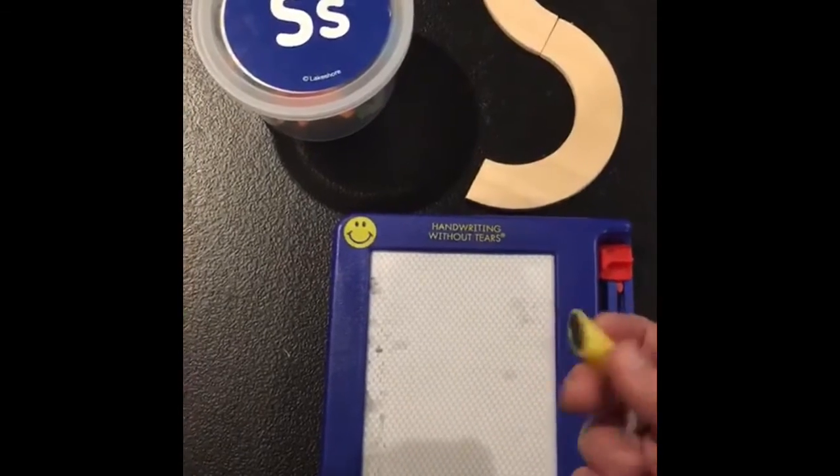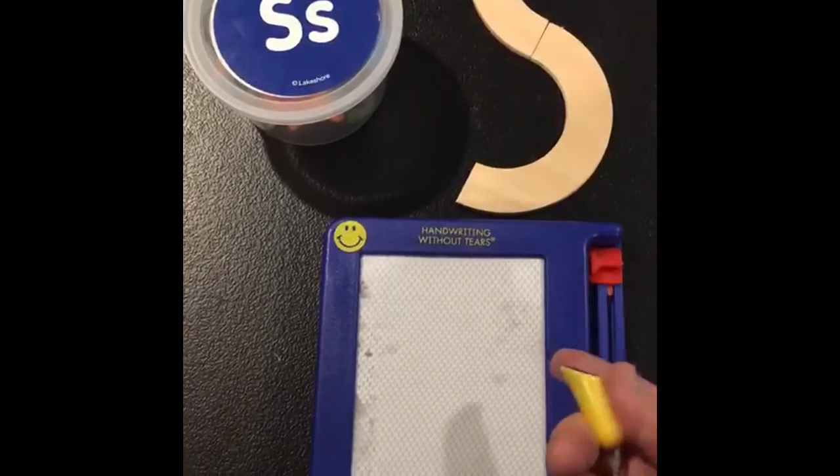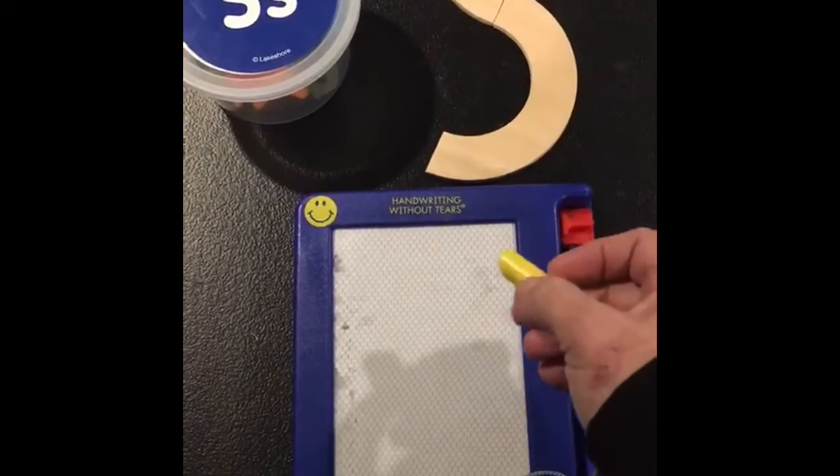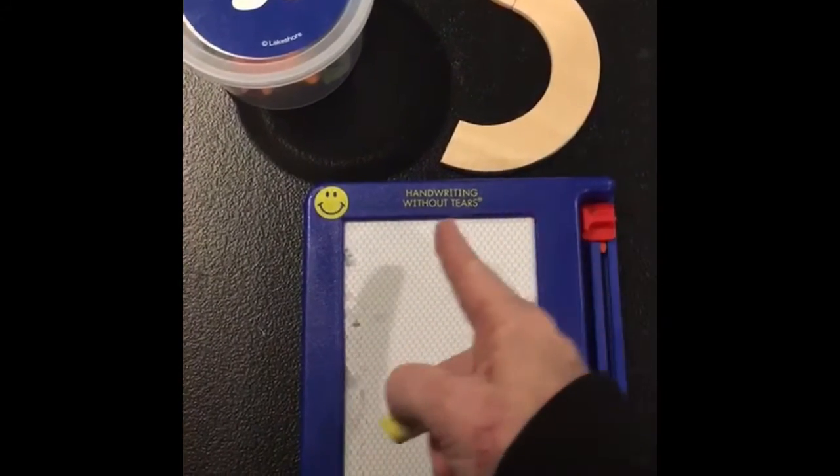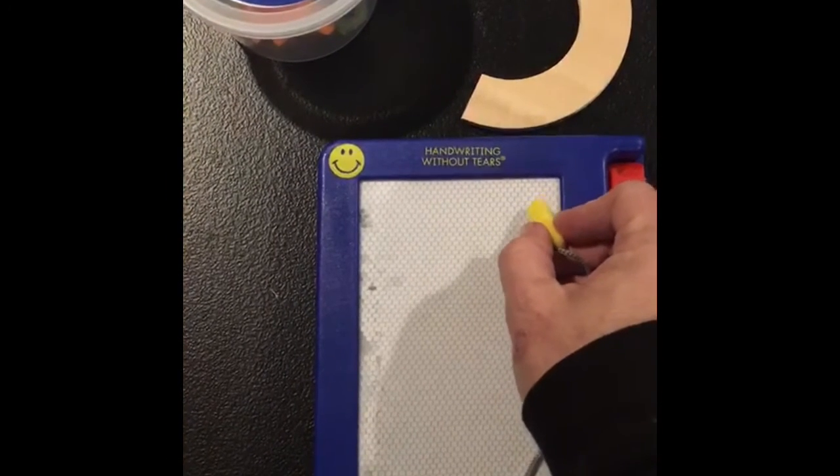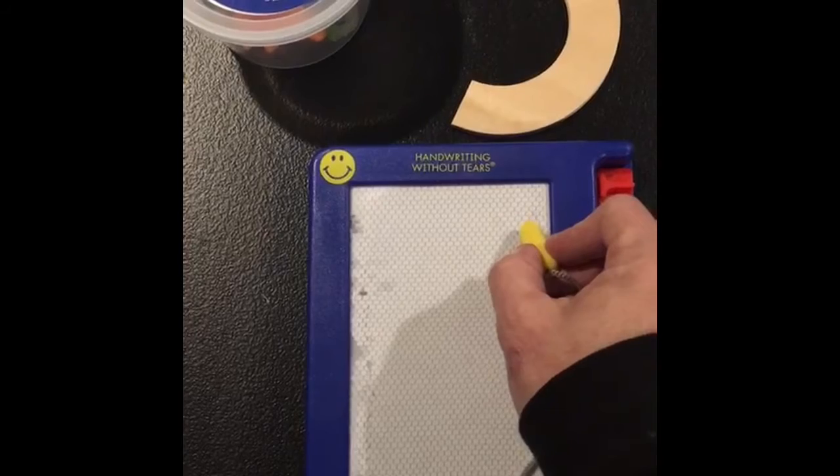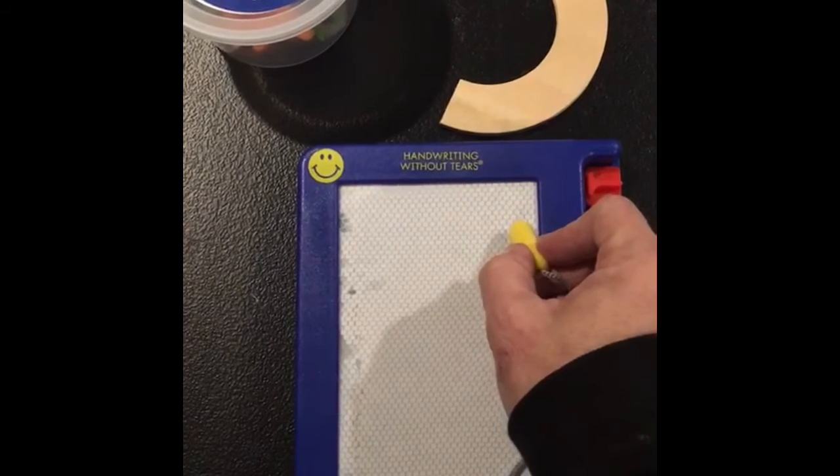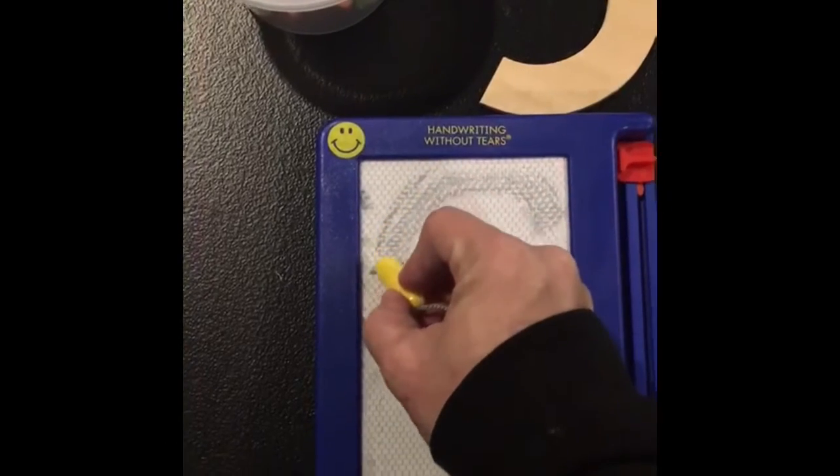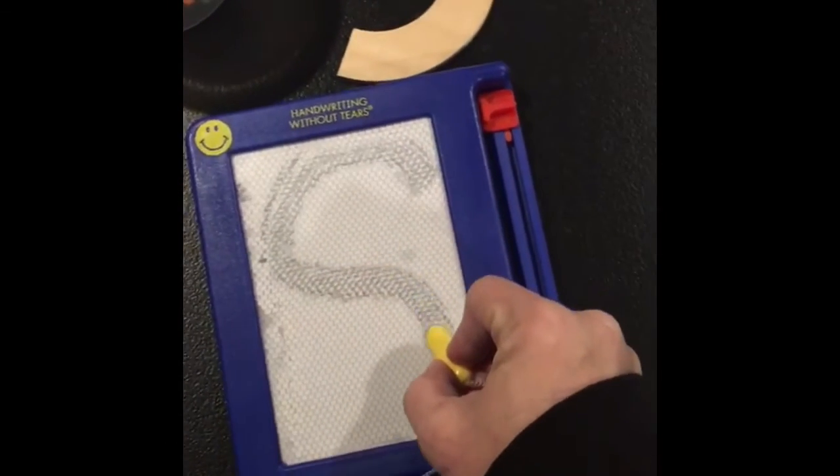So what we're going to do is we're going to make our letter S. I have a magnet board like a magna doodle and you guys know what this is because we use it at school all the time. So what you're going to do is you're going to go up to the top. I'm going to go over to the right over here. I'm going to make like I'm going to make a C, which we made at school. So we're going to make a curve. We're going to go up and as we come back down, I'm going to go backwards with it.